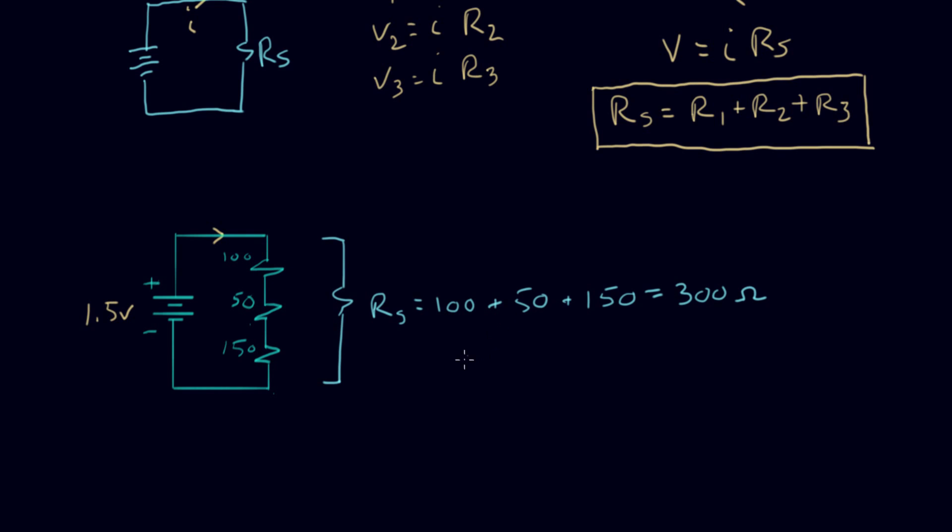So that's the value of the equivalent series resistor right here. And if I wanna calculate the current I, I equals V over R. And in this case it's R series, and that equals 1.5 divided by 300. And if I do my calculations right,